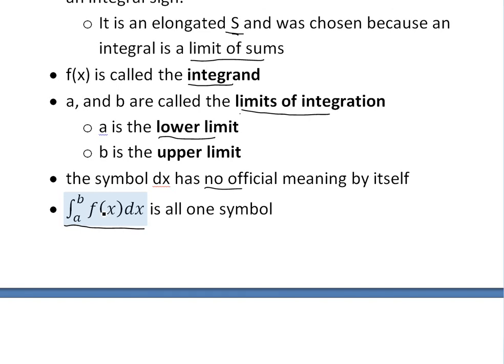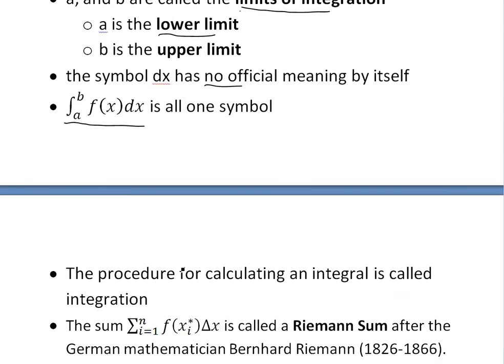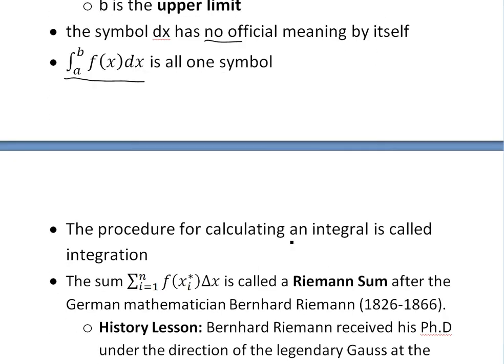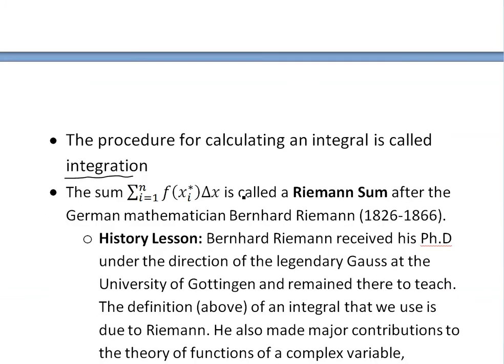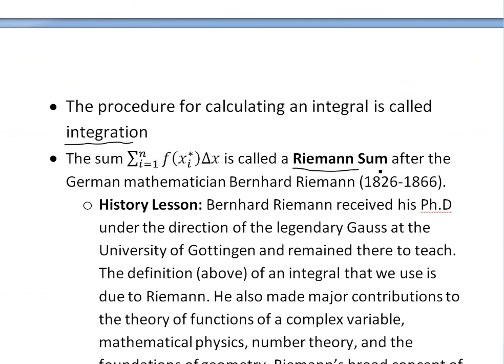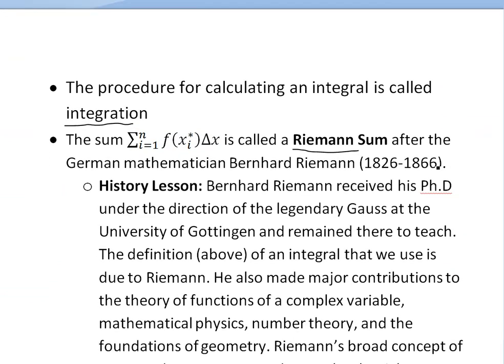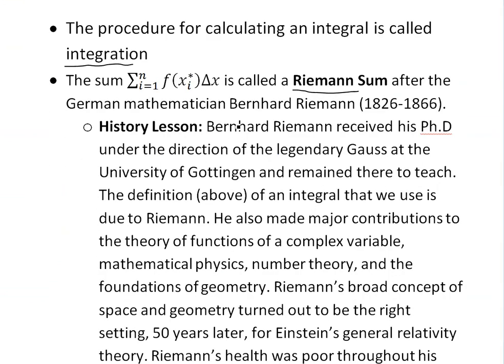So integral of a to b of f(x) dx, here. And also, the procedure for calculating an integral is called integration, here. And also, the sum here, this sum of the rectangles here is called a Riemann sum, after the German mathematician Bernhard Riemann, born 1826 to 1866. And here's a brief history lesson in my calculus book, so I might as well just share it with you guys, if you're interested in this or whatnot.